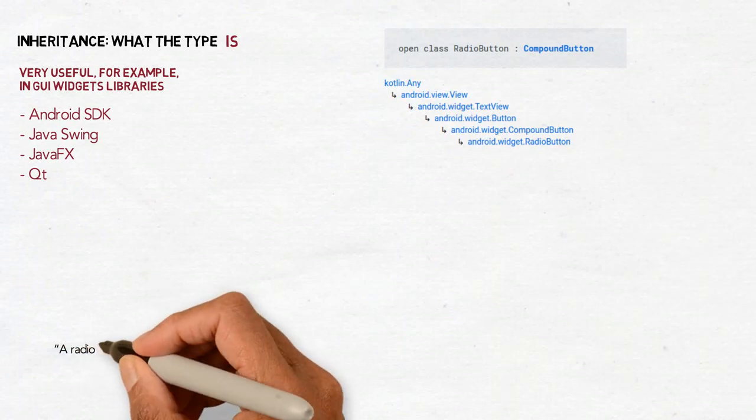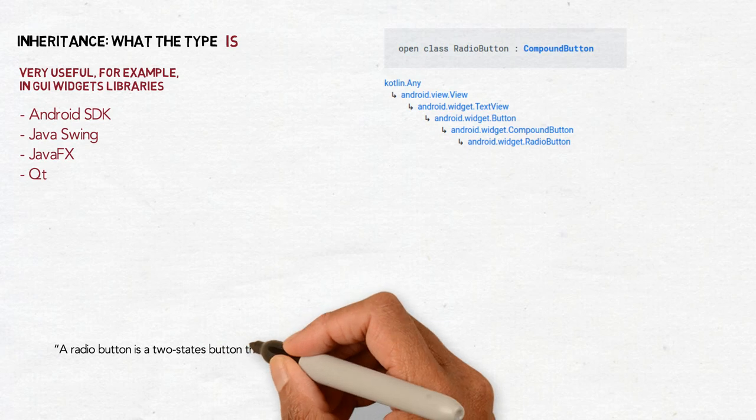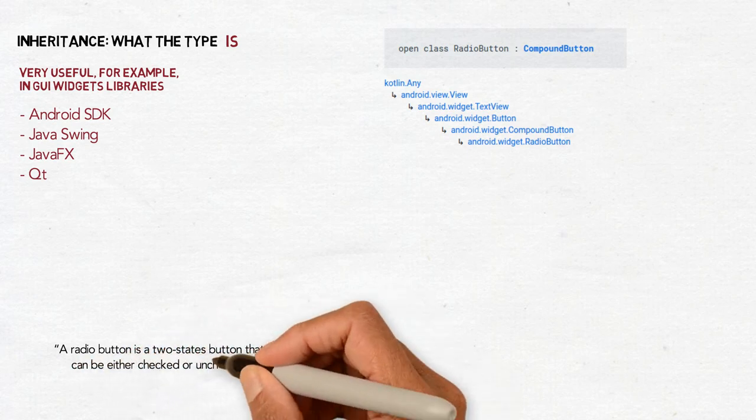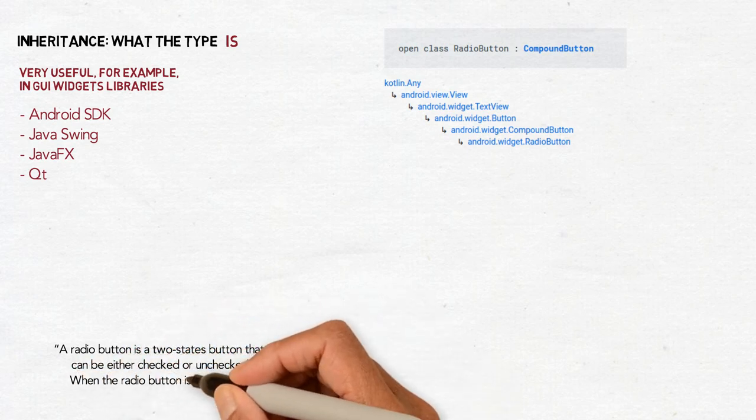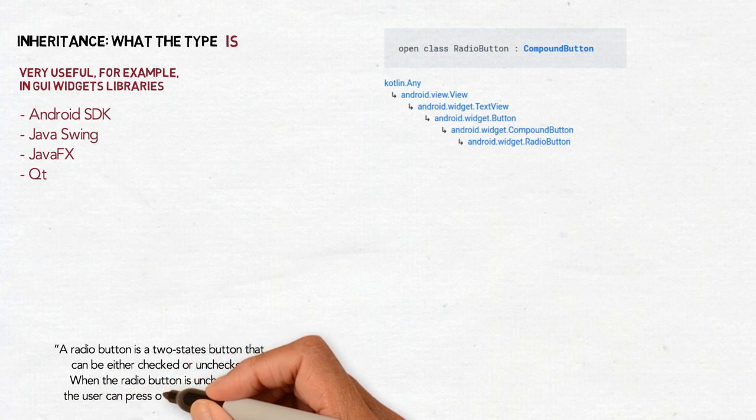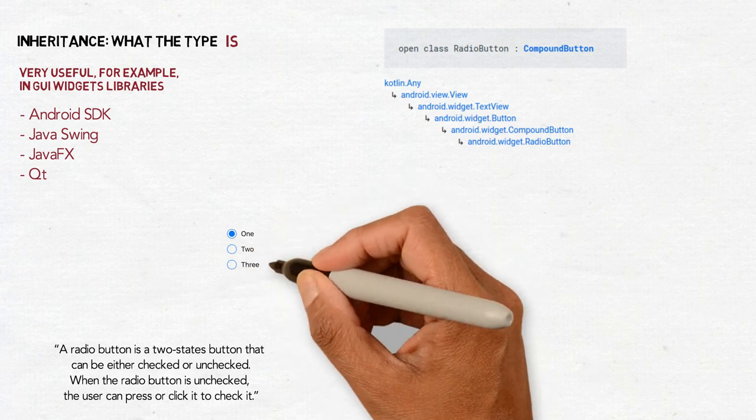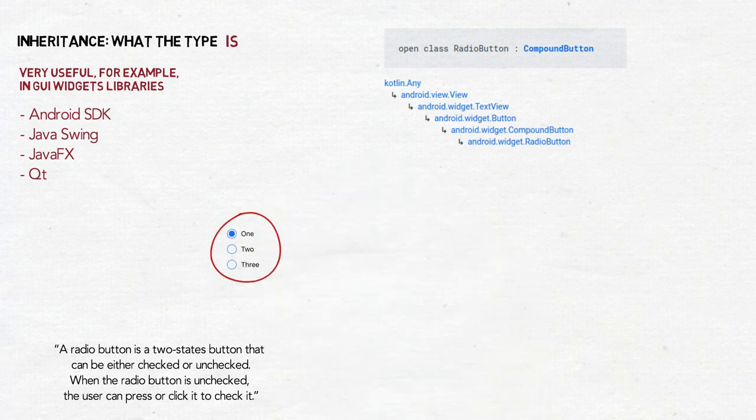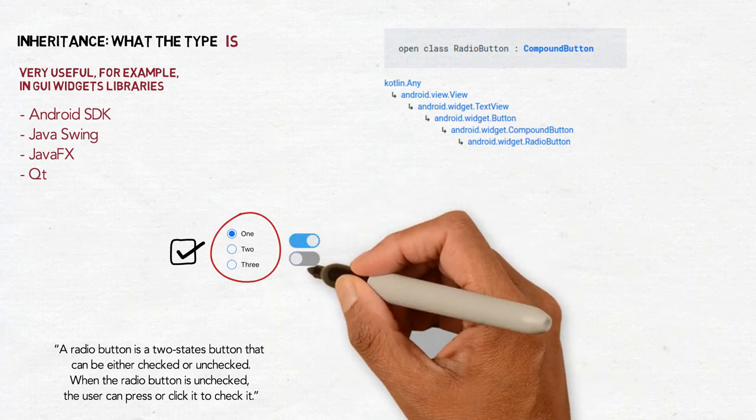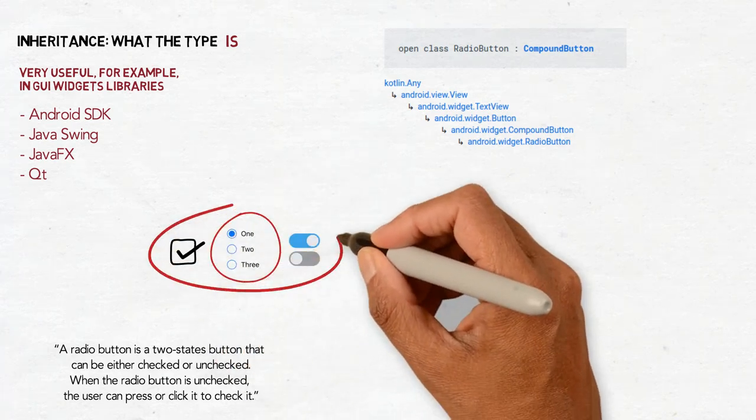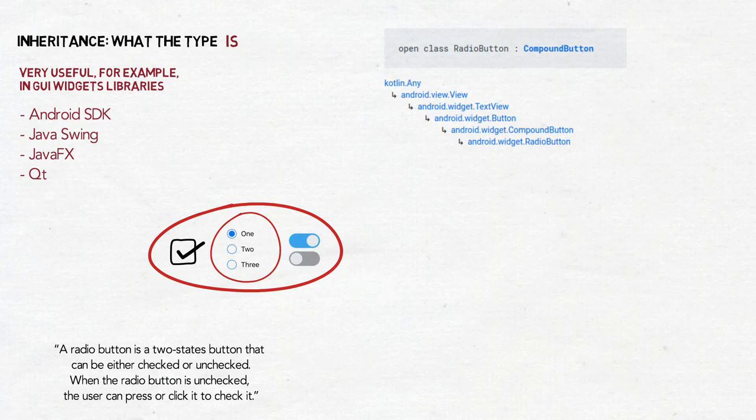Let's take a look at a simple radio button from Android SDK. Quoting the documentation, a radio button is a two-stage button that can be either checked or unchecked. When the radio button is unchecked, the user can press or click it to check it. Radio button is a special case of compound button, which is a common parent class also for checkbox, toggle and switch.